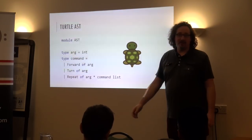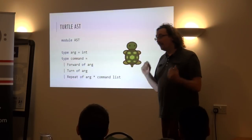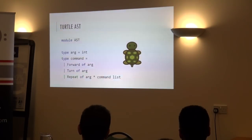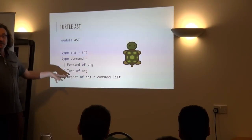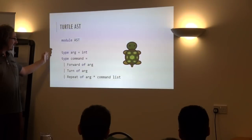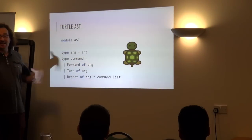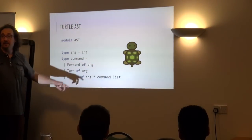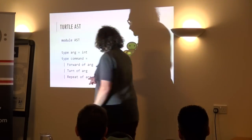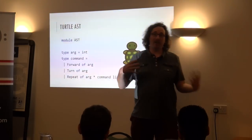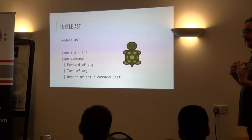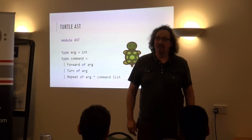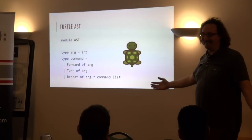This is F-sharp code — this is the abstract syntax tree for those few lines of code. This is why we can do it in 24 hours: we've described the abstract syntax tree in four lines of code. If you're going to do compilers the easy way, you want to use something that has an easy way of describing trees. We define a type — arguments are ints for now. A command could either be: forward of argument, turn of argument, or repeat of argument — that's the count and the list of commands. So that's recursive. As our language gets more complex and we add new features, we just add things here.